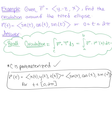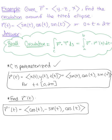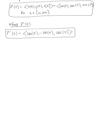We can now use this to find the tangent vector. So r prime of t is going to be equal to cosine of t, negative sine of t, cosine of t. We'll also use our parameterization of this tilted ellipse to rewrite our function.